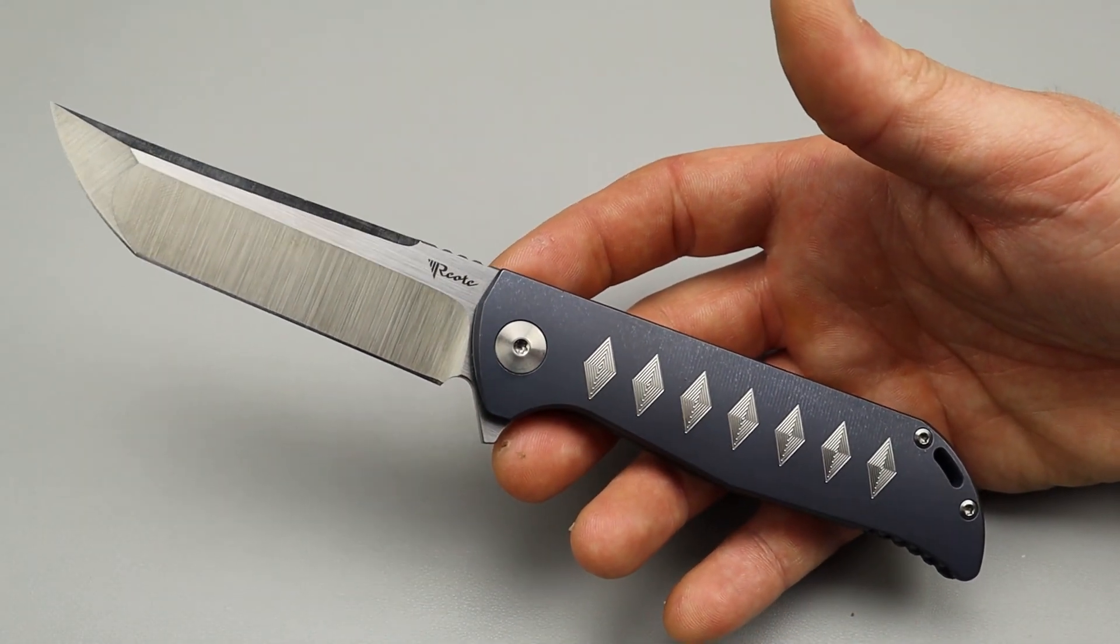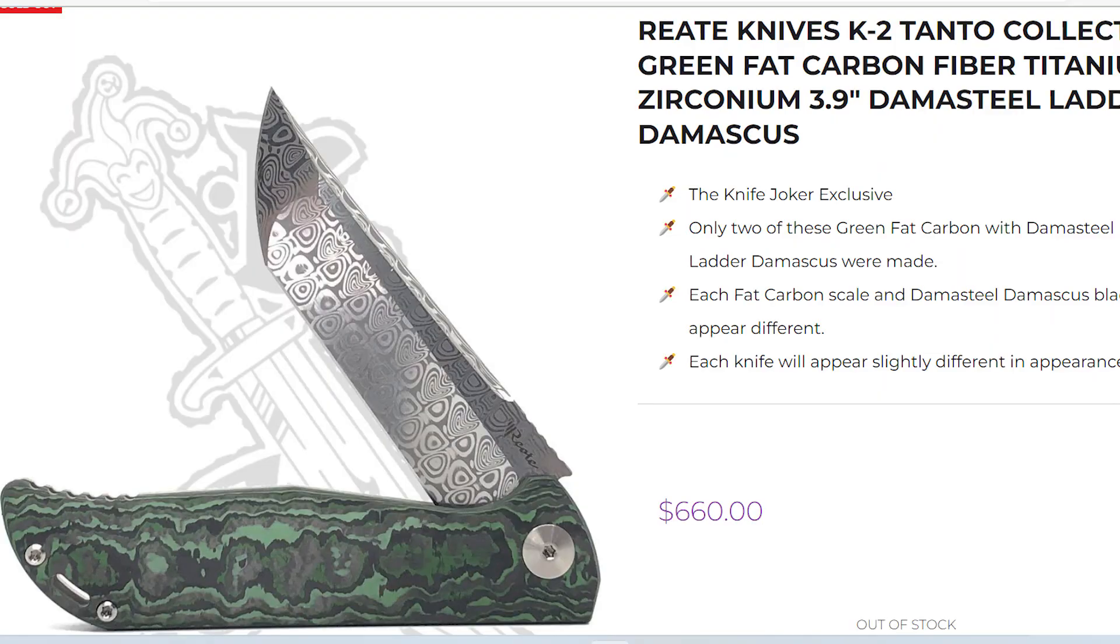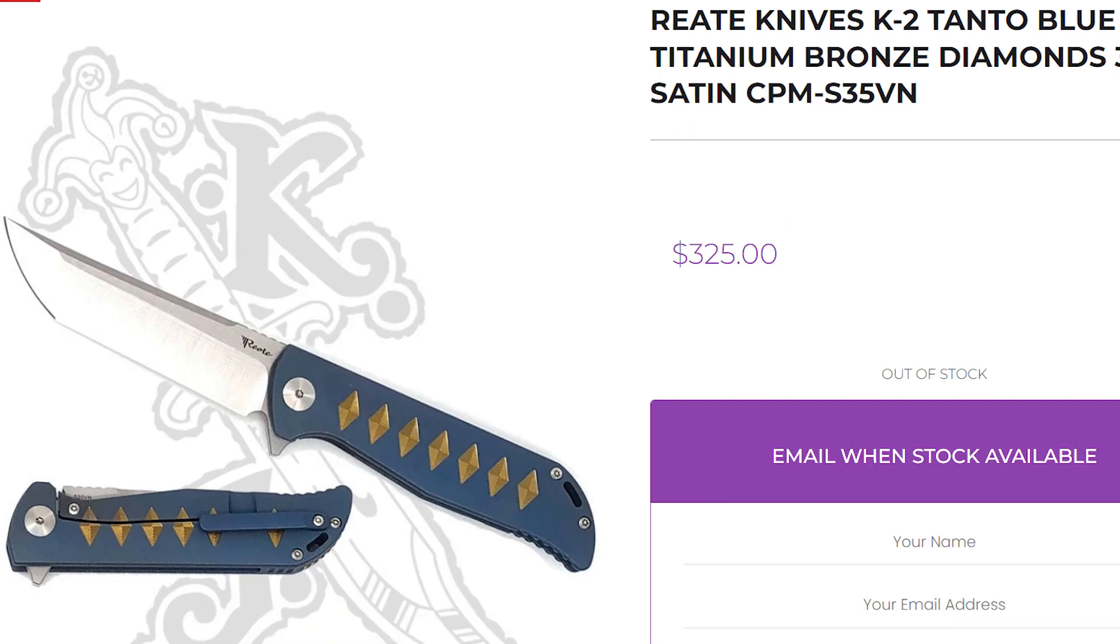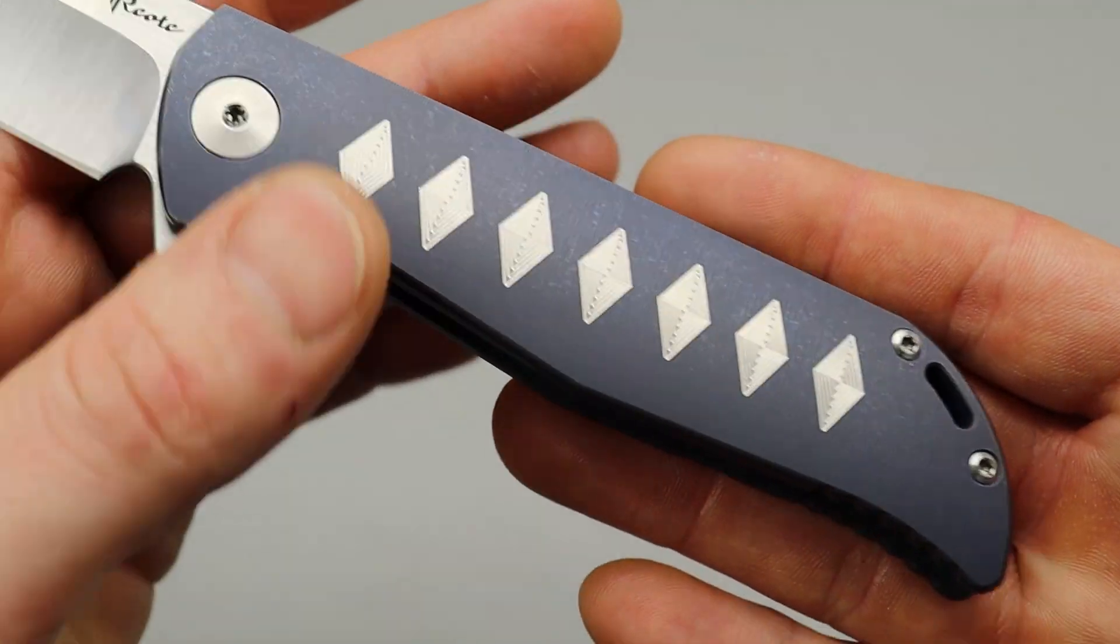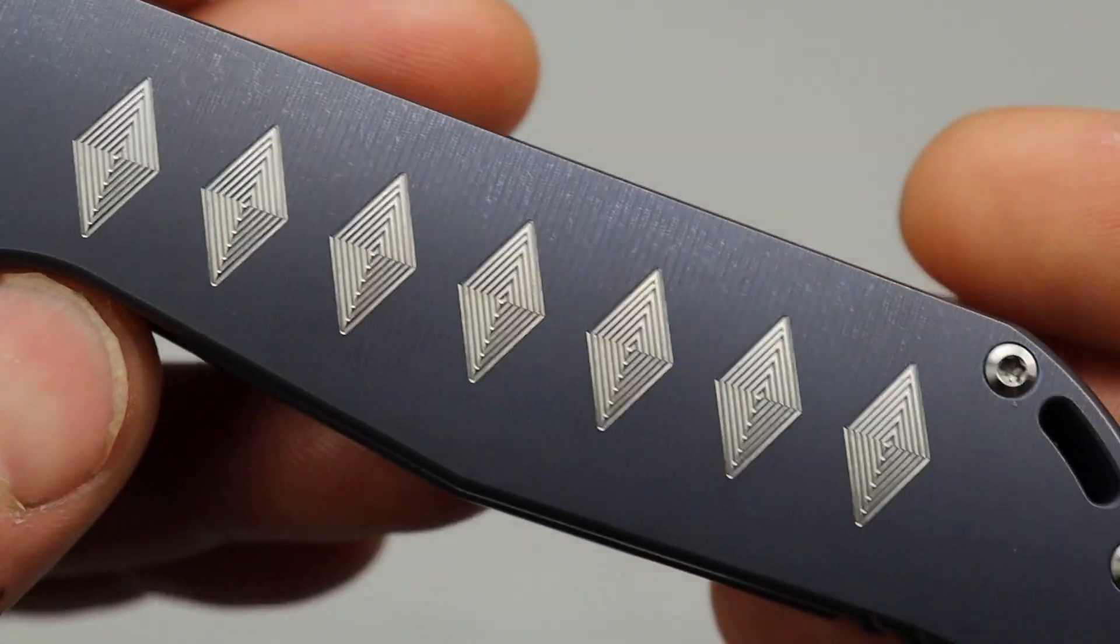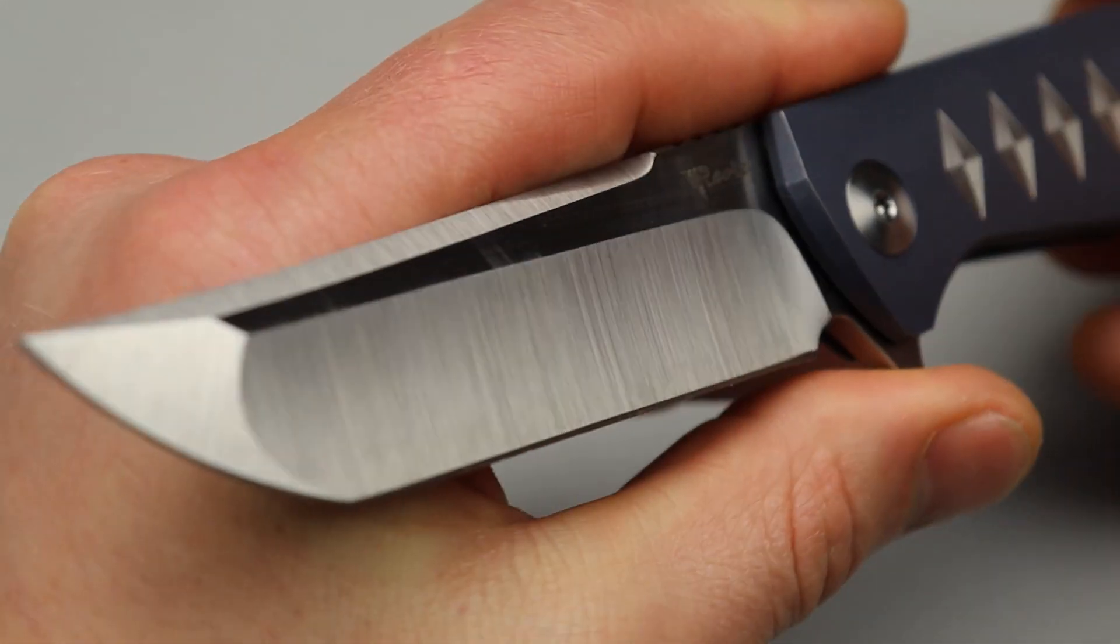Now, this is not one of the five, and I know this is probably the most resembled to a katana, but this is the React K2. These are very difficult to get. You might be able to find them on Knife Joker every once in a while. They do come in many different options. This is the one that looks the most like a katana because of the diamond-shaped milling, which is really nice. I love the React K2, one of my favorite Reacts.